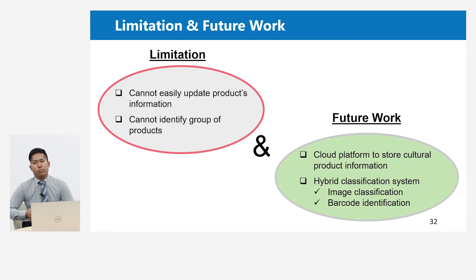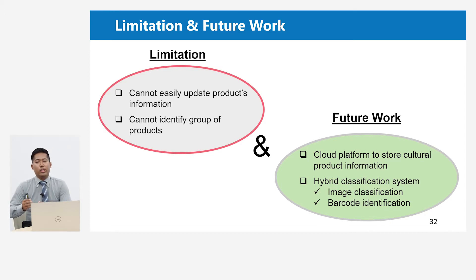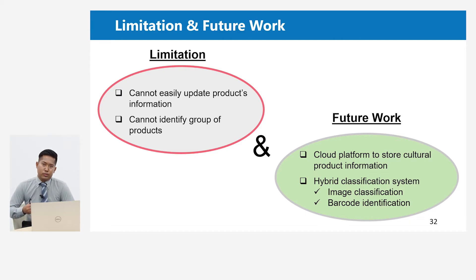This is the limitation and future work of my research. For the limitations, the current application cannot easily update product information, and the application cannot identify a group of products. For future work, we can develop a cloud platform to store customer product information, because currently the information is stored in a JSON file. If we develop a cloud platform, it will be easy to replace with a new information file. We can also develop a hybrid classification system using both image classification and barcode identification.